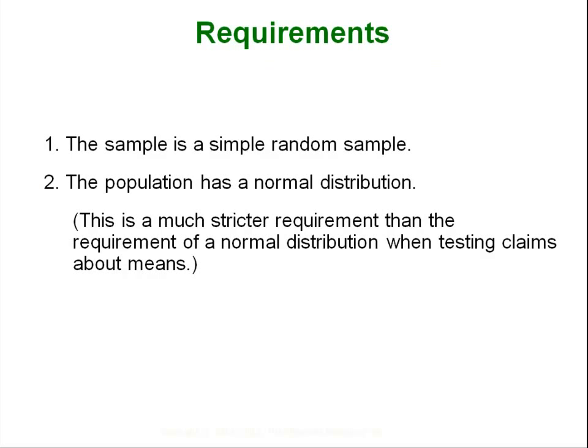The requirements necessary to run this test: as always we have to have a simple random sample and the population has to have a normal distribution. Now before we have seen that if we aren't sampling from a normal distribution as long as we have a large enough sample we can kind of get away with it. When we are dealing with the chi-square however, having a normal distribution is a much stricter requirement. We don't have the luxury of saying well as long as our sample is large enough it doesn't need to be a normal distribution.